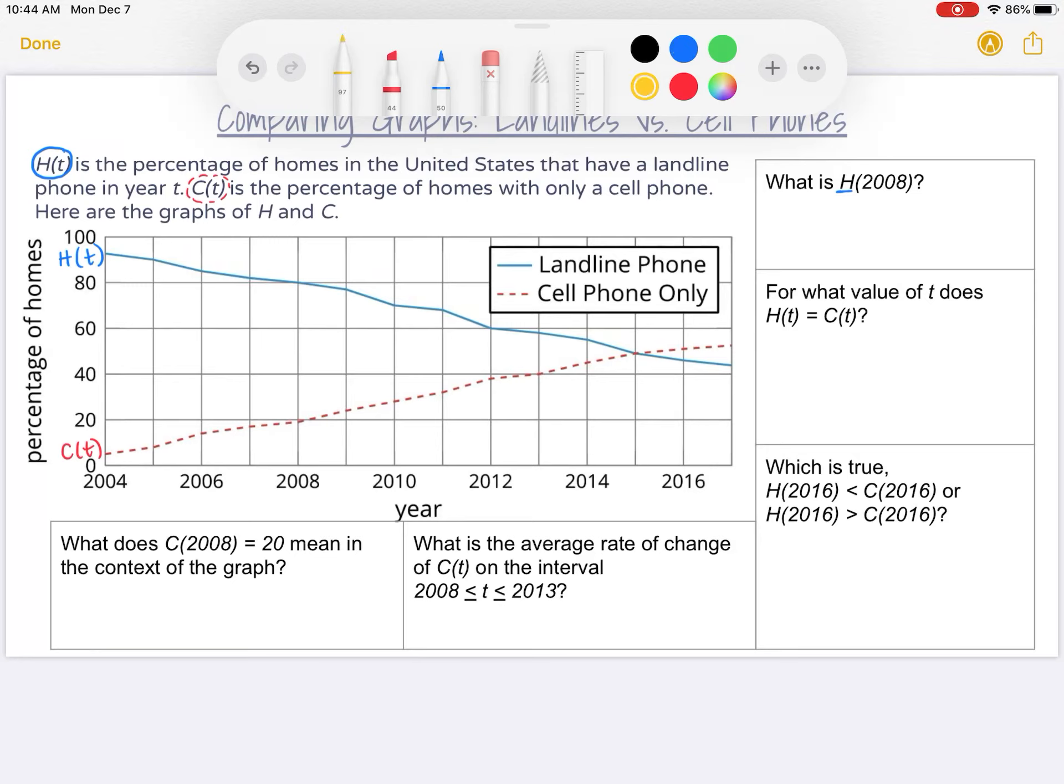I see 2008 is right here. Then I need to go up to my blue line, not to my red line. I'm going to go past the red line and up to my blue line to see what is the output for the input of 2008 for H(t). So here's the point on my graph. I just need to go look what is the y-value, which in this case is percentage of homes. And it is at the value of 80. So H(2008) equals 80.